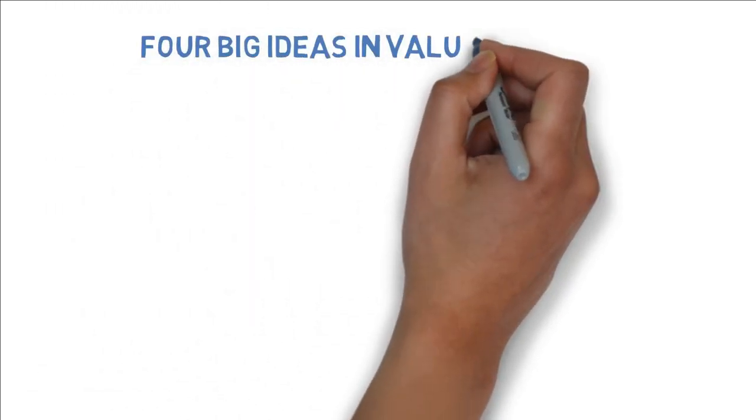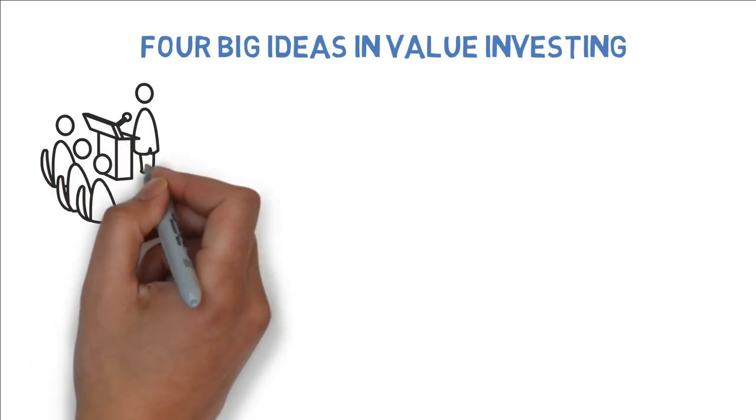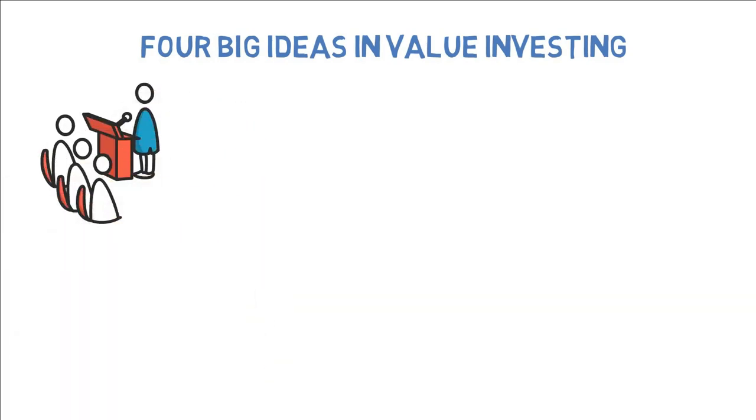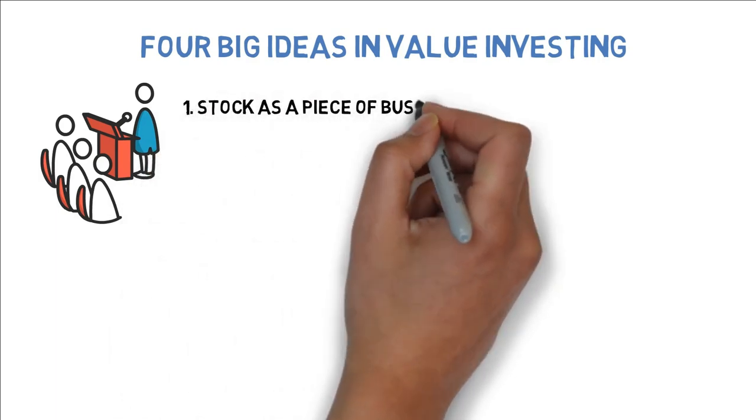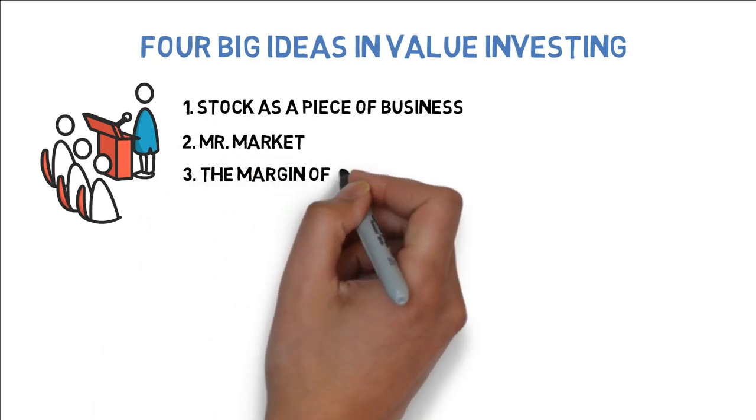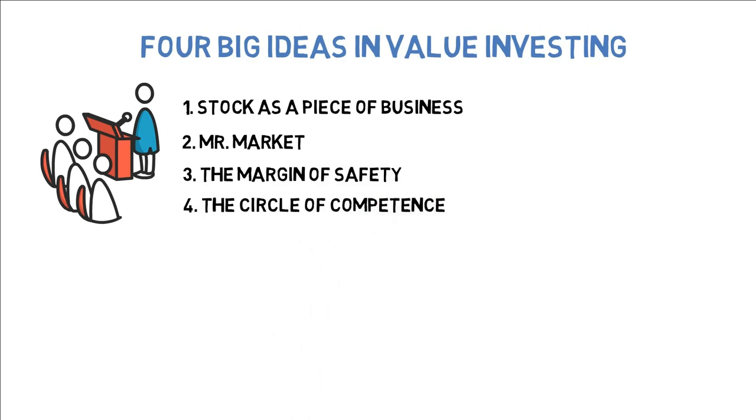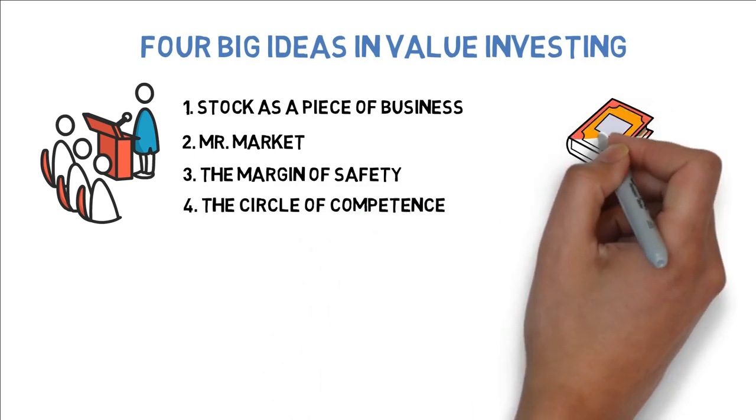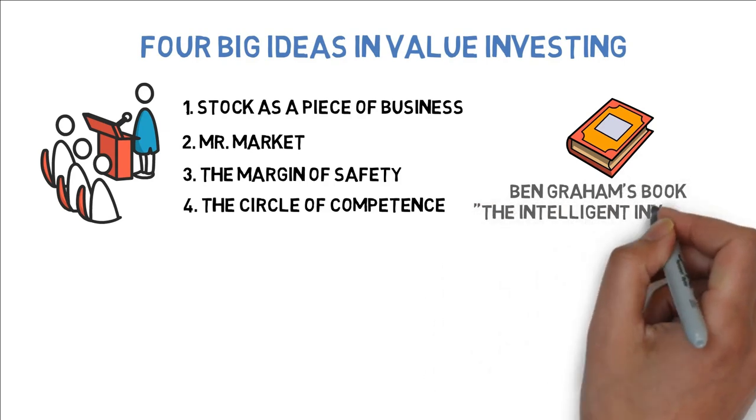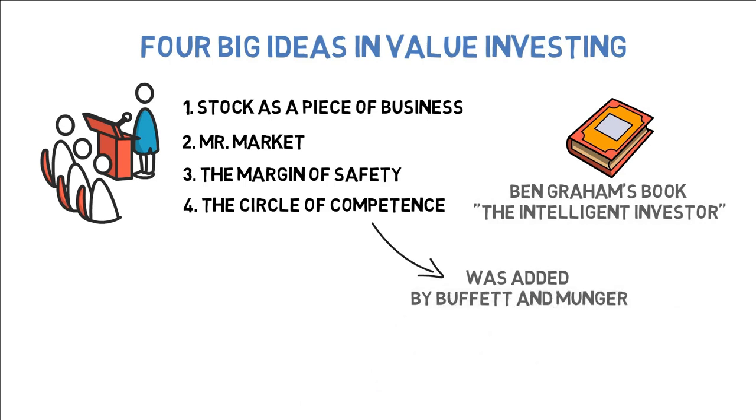Secondly, we will look at the four big ideas in value investing. In his book, he transcribes his talks to different universities and those lectures, I think, can broadly be summed up into the following four points of understanding value investing. Number one, stock as a piece of business. Number two, Mr. Market. Number three, the margin of safety. Number four, the circle of competence. The first three can be traced back to Benjamin Graham's book, The Intelligent Investor, and the last one was added by Buffett and Munger. These concepts are often overlooked when people first start investing.